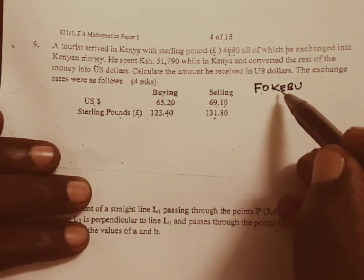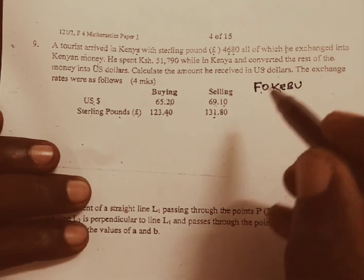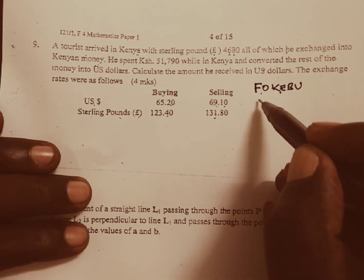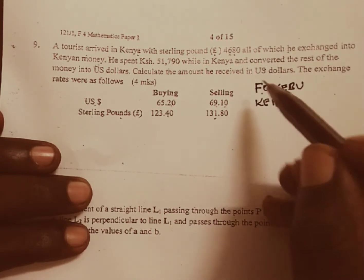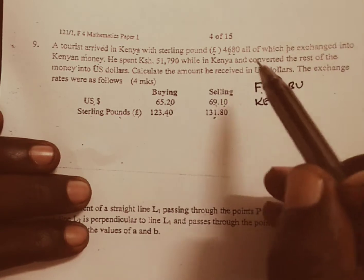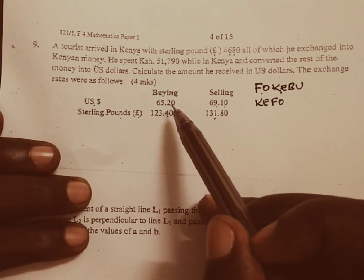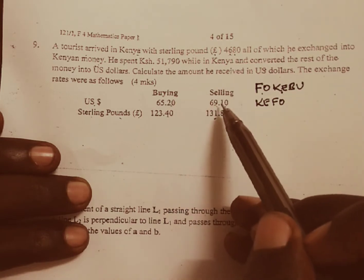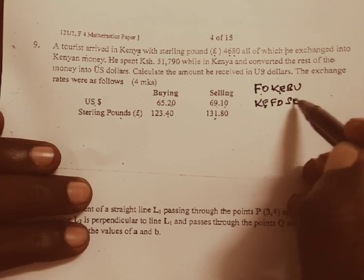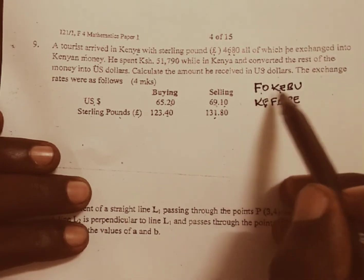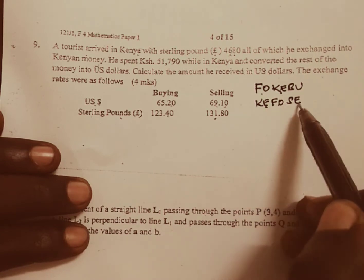That is from foreign to Kenya we use the buying column. And if now they are through with their business in Kenya, they want to go to their foreign countries, they will go to the bank and buy their foreign currency and this time around the bank will sell. So Kenya to foreign we use the selling column. That is foreign to Kenya buying, then Kenya to foreign we sell.